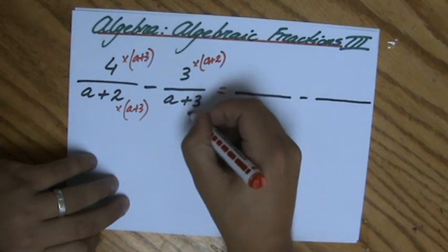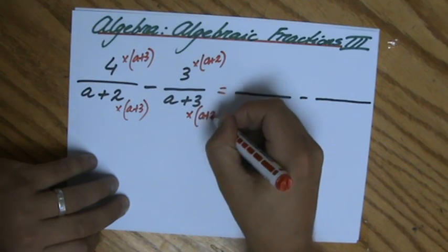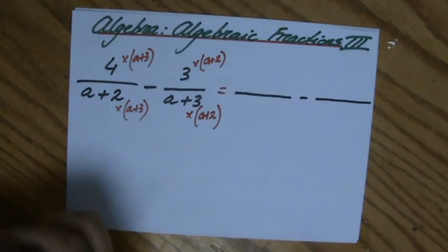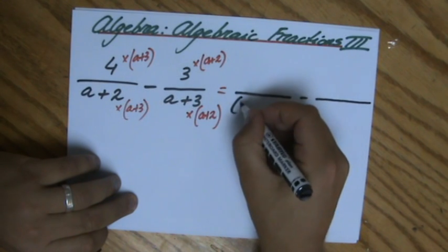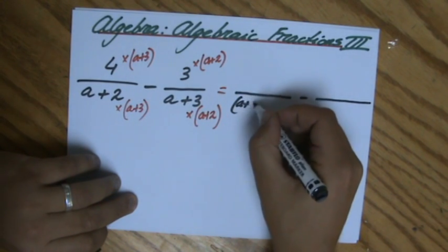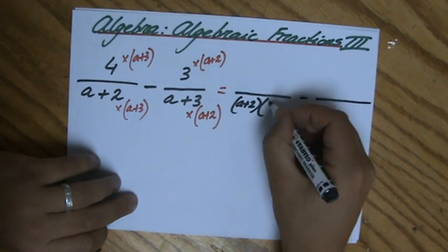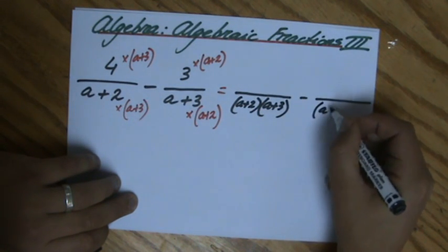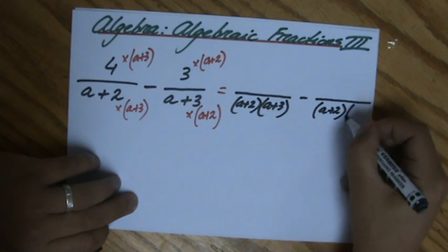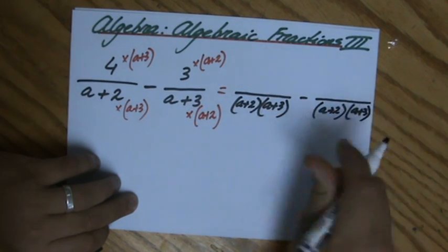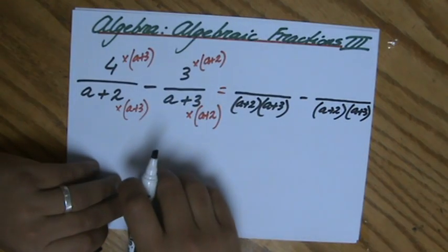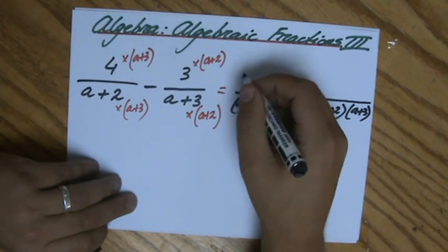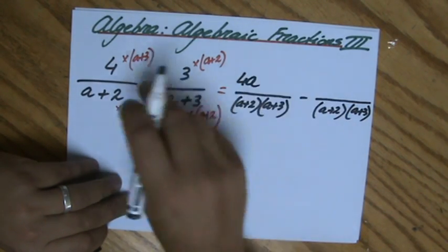What is that going to look like then? I'm going to start with my denominators. I put some brackets around everything. Now a+2 times a+3, there's no reason to expand that, you can just leave it like it is. a+2 times a+3. Denominators are the same now.